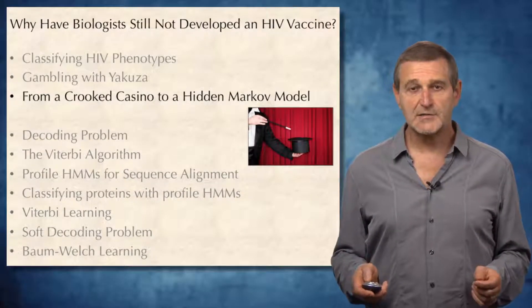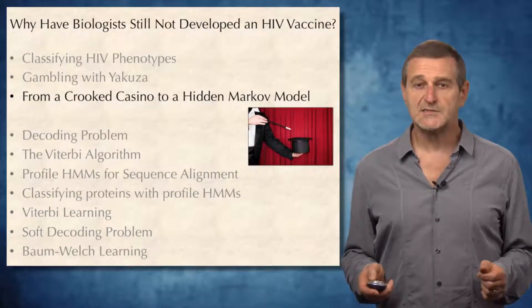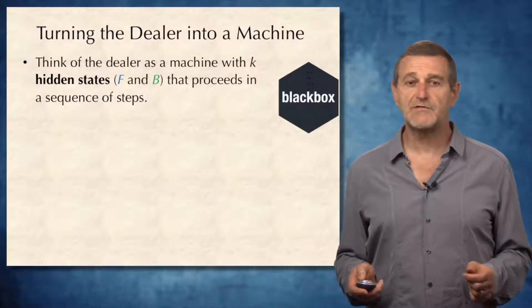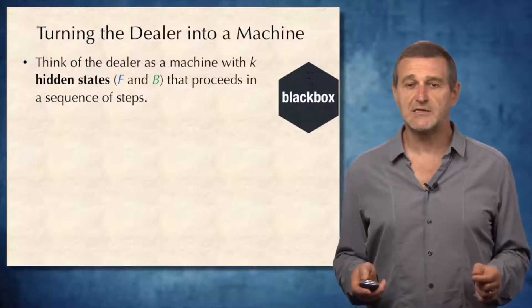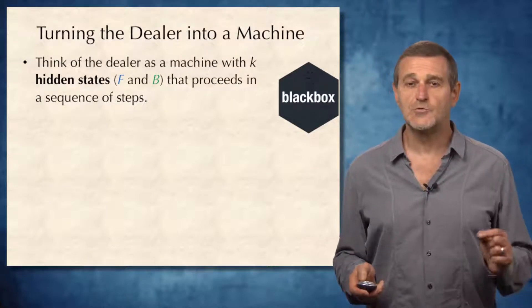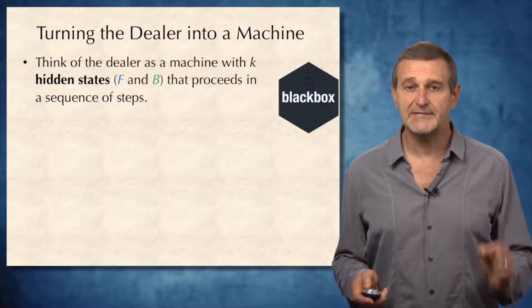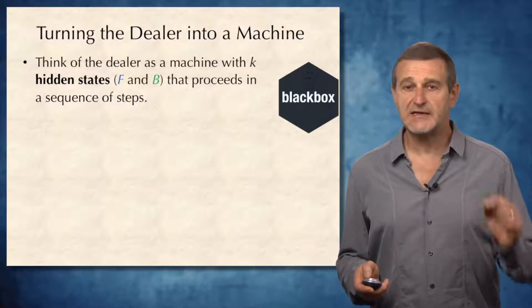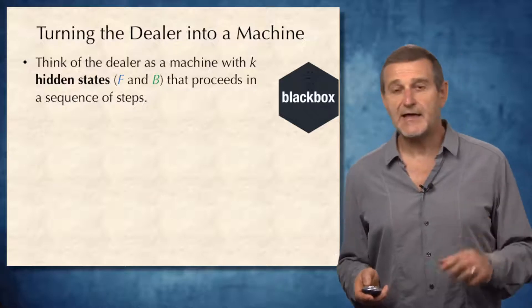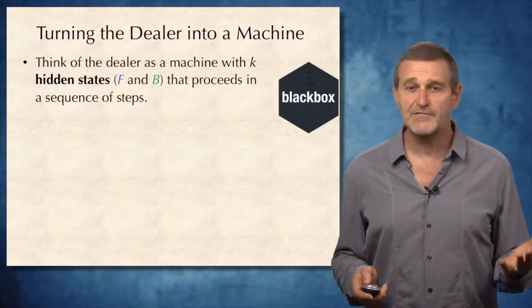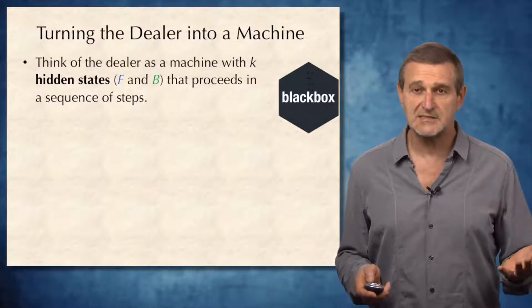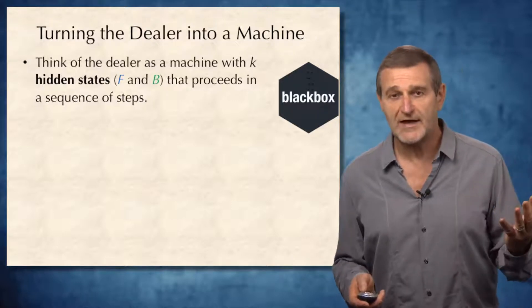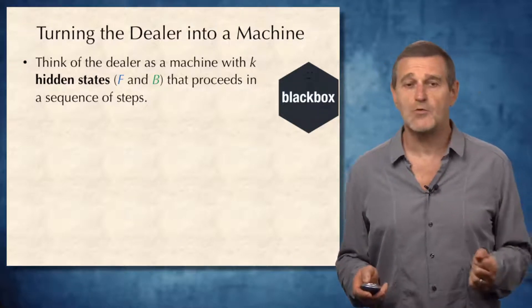We are now ready to define the notion of the hidden Markov model. To do this, we will turn the dealer into a machine with k hidden states. This machine will proceed in a sequence of steps, and in the case of coin flipping, these hidden states will correspond to fair or biased coins.